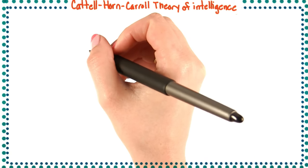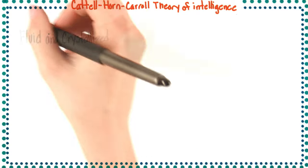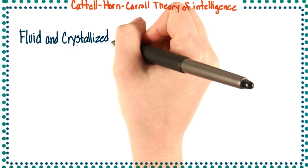This theory focuses on the idea that intelligence comes in two distinct forms, fluid and crystallized intelligence.